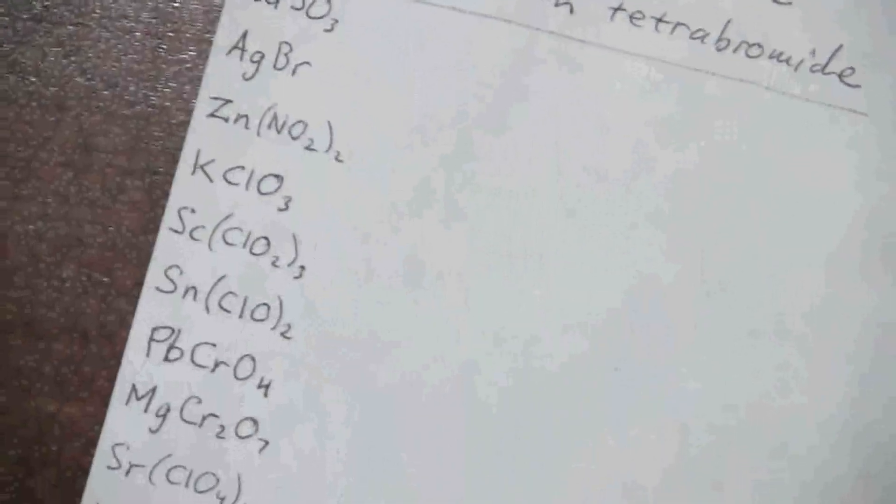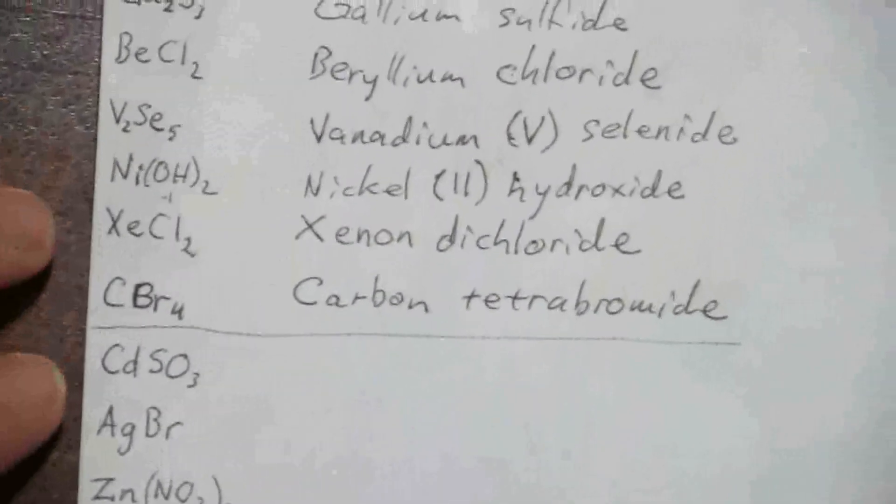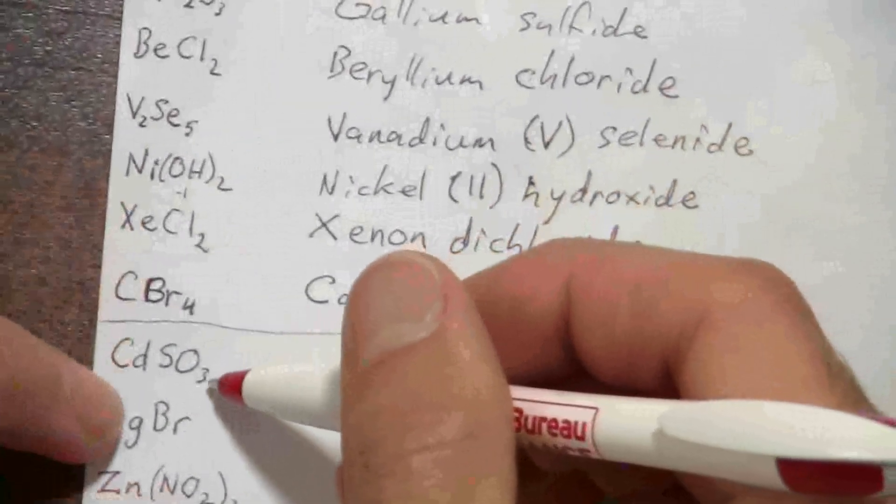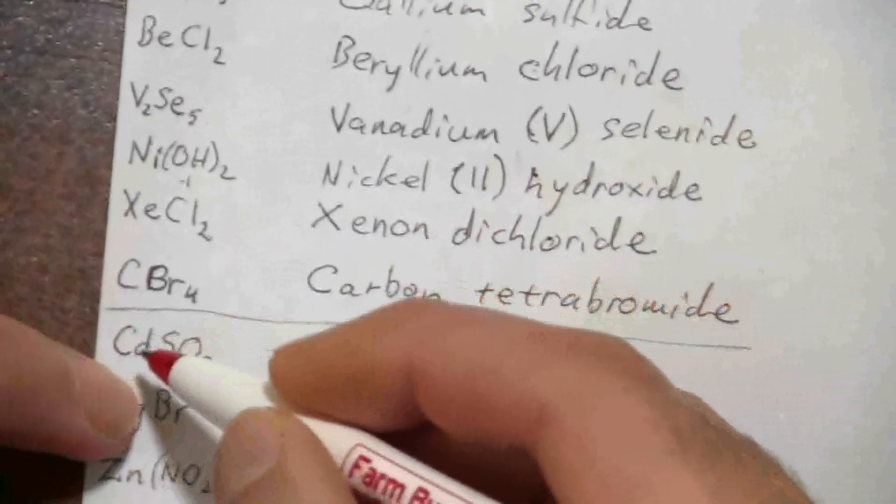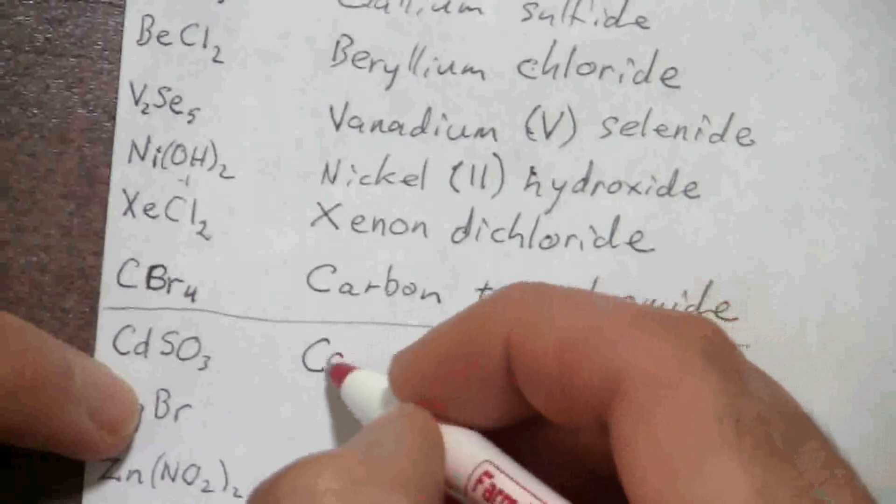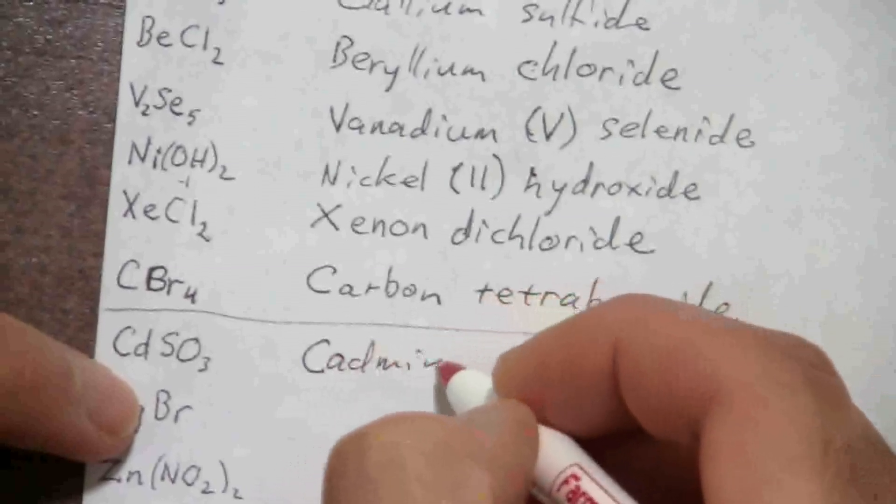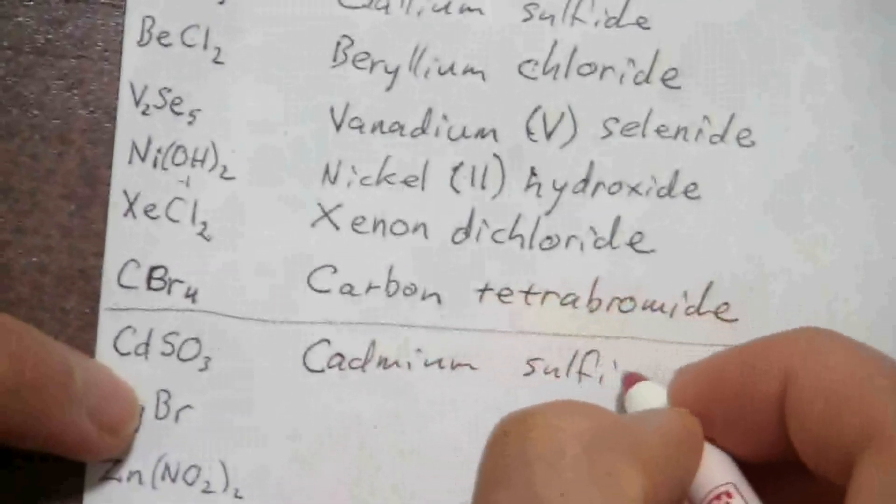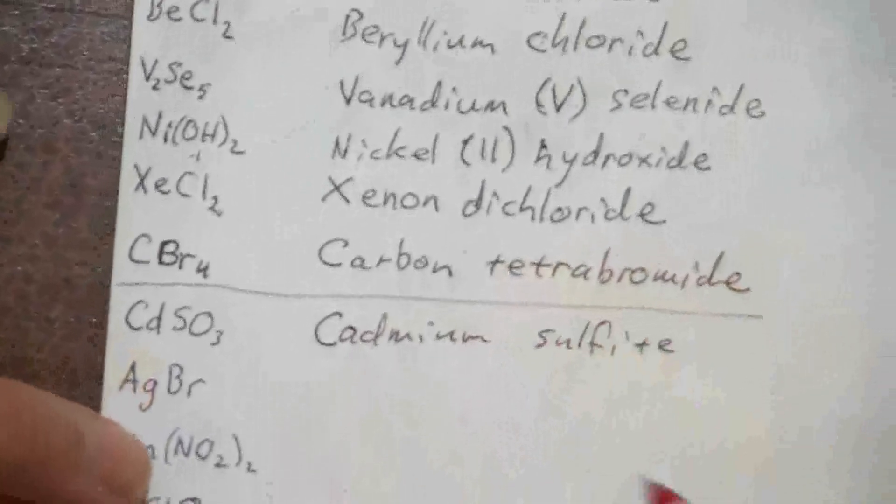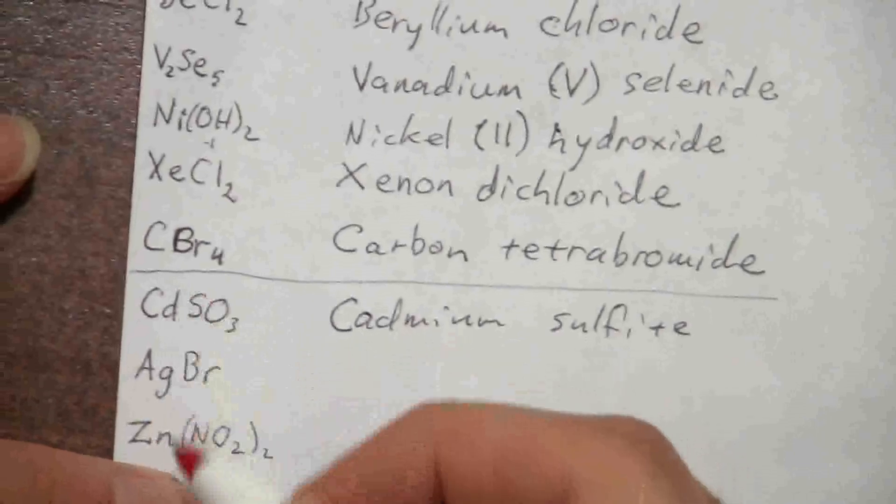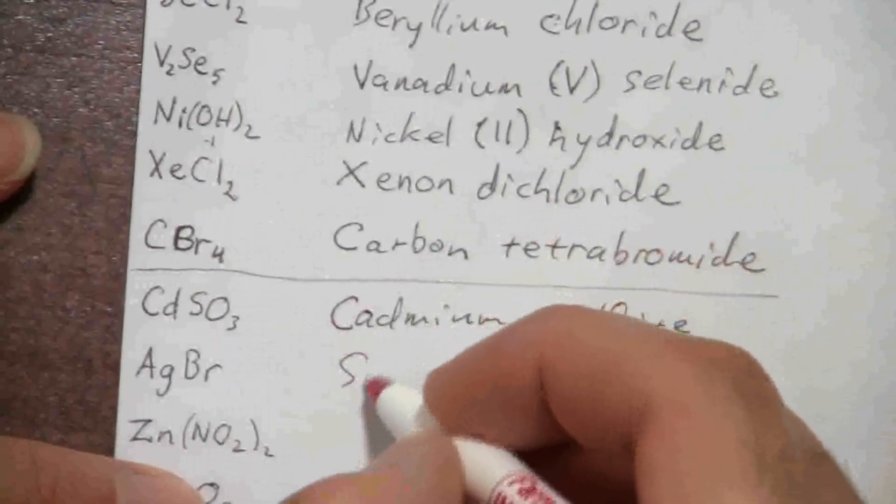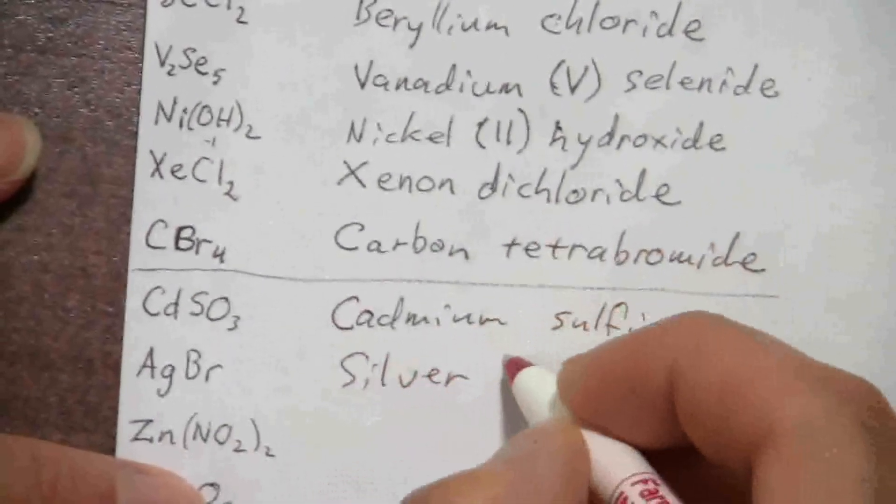So we have cadmium sulfite. And since cadmium is always a plus two, we don't need to specify the charge in Roman numerals. And that's for all three of these. Silver, this is just silver bromide.